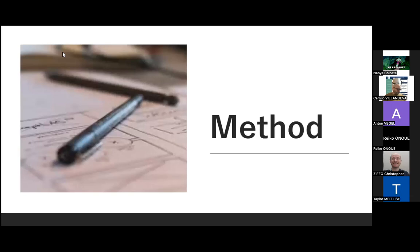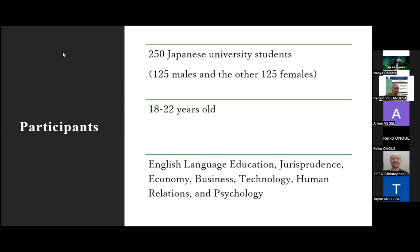Now moving to the methods section. In this research study, 250 Japanese university students participated. Their ages ranged from 18 to 22 years, meaning first year to fourth year university students.